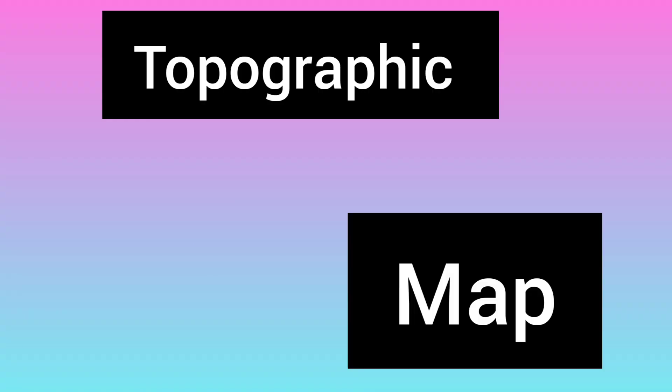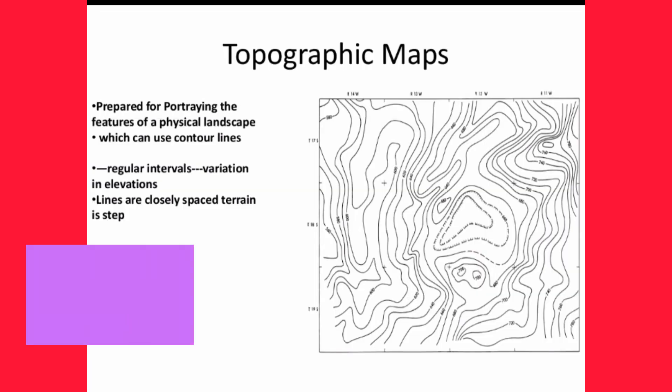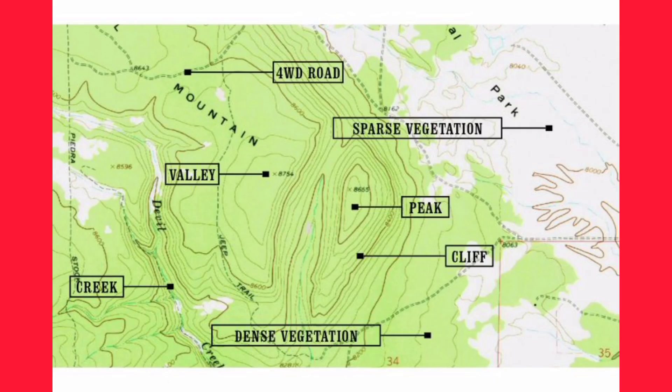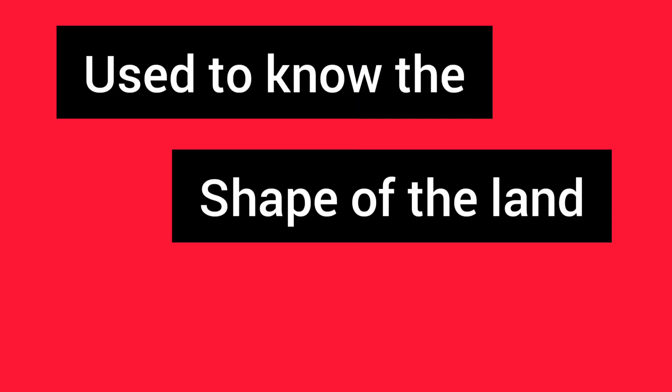Next we are going to discuss about the topographic map. A map which explains about different landscapes is called a topographic map. These maps give information about the shape of the land — whether it is flat or elevated — which is useful while constructing dams and roads.